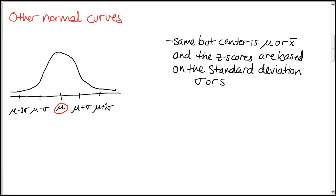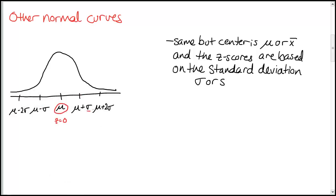Typically the center wouldn't be zero. Moving to each side, this represents a z-score of zero. If I move over by one standard deviation — either sigma or s, depending on whether we're talking about a sample or a population — this would be z equals one. Z equals two would be two standard deviations away. Moving in the negative direction, we have z equals negative one, z equals negative two. The shape is going to be the same, but we'll have to make some adjustments for non-standard curves.